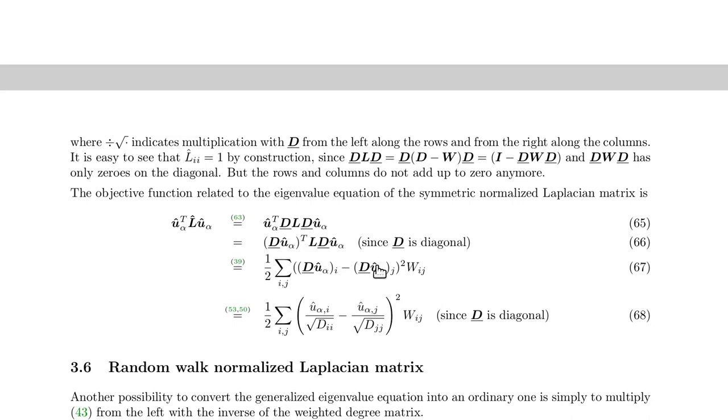Our equation 39 from above relates this y transpose L y to this term where we have y_i minus y_j. Then if you do this multiplication with this D matrix, we get this objective function.